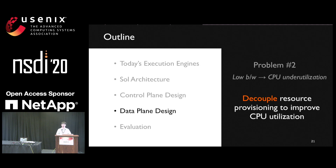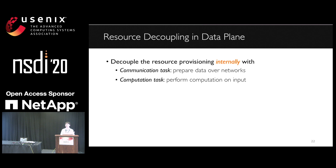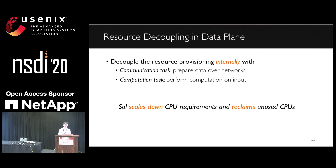Next, we return to the data plane decoupling to tackle the low bandwidth network. We decouple the resource provisioning in task execution to improve overall resource utilization. In existing designs, tasks will hog their CPUs throughout the lifespan, which can lead to CPU underutilizations. So in SOAR, we split the role of task execution by introducing two types of subtasks. The communication task will prepare the data over networks. During this course, SOAR will match the actual CPU utilization and may use fewer CPUs for data preparation. When the communication task completes, SOAR will create the computation task to perform the real data processing. This way, SOAR can scale down CPU requirements during data preparation, and the reclaimed resources can be repurposed for other job executions.